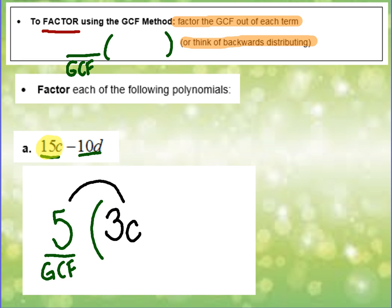Then we need to ask ourselves, 5 times what will give us the negative 10d? So I have a 5. I need to multiply by negative 2 to get a 10. And it needs a d, so I'm just going to attach the letter d on at the end here. So here you have it. 5 times 3c minus 2d is 15c minus 10d in factored form. Going forward, we're not going to draw in these arcs. We're just using them to help us write out our factored form.